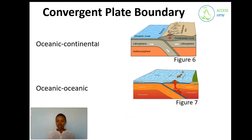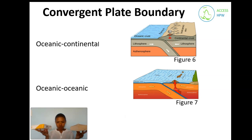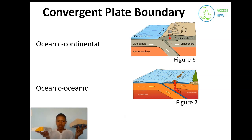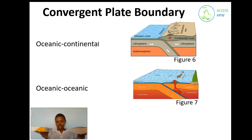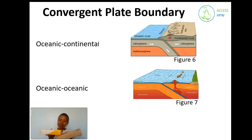The first type, shown in figure six, is oceanic-continental convergence. This is when the oceanic crust moves towards a continental crust. The oceanic crust is denser, and when they collide, the denser one sinks beneath the less dense continental crust.